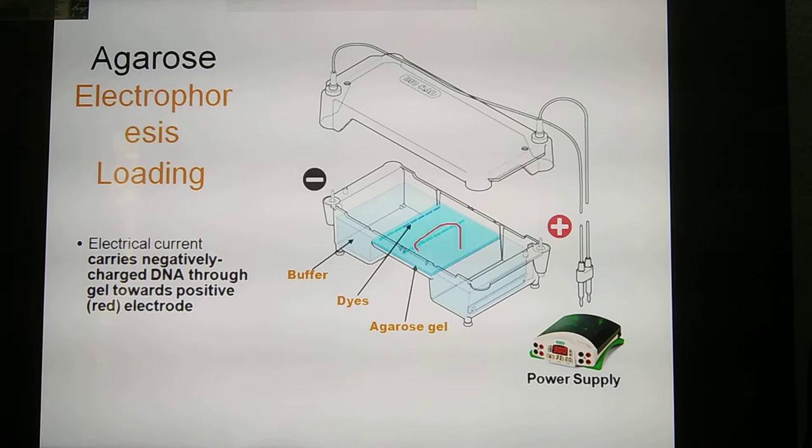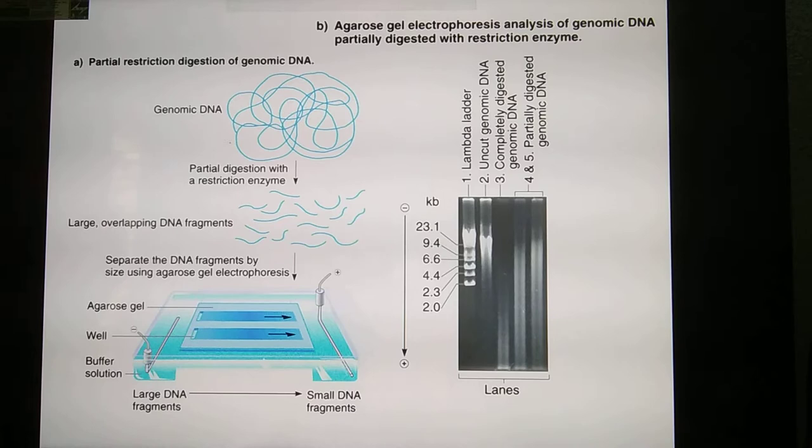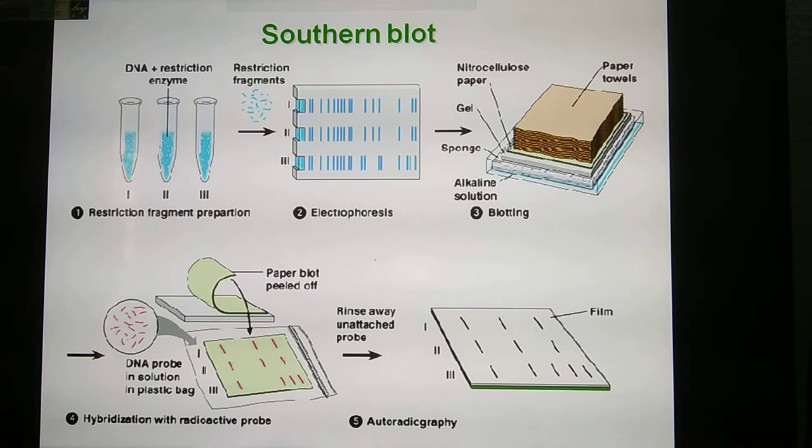After the gel is stained with a dye, the fragments become visible. The DNA fragments move from negative to positive. Using restriction enzymes, we can get the same fragments, and using DNA markers we can determine the size of the fragments.